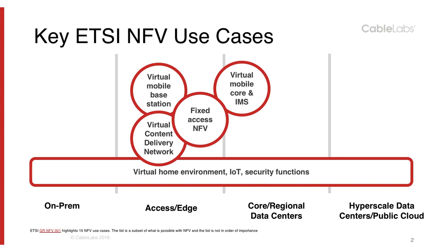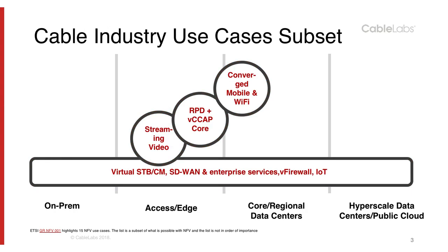So these are just a subset of the use cases that ETSI summarized, which in turn is a subset of all possible NFV use cases. Now let's look at a subset of use cases that have particular relevance to the cable industry. The first one we'll look at is converged mobile and Wi-Fi. Cable providers are expected to play a big role in 5G — it's not just mobile operators. With converged mobile and Wi-Fi, it provides cable operators a unique differentiator, since most wireless traffic today is over Wi-Fi and not cellular networks.